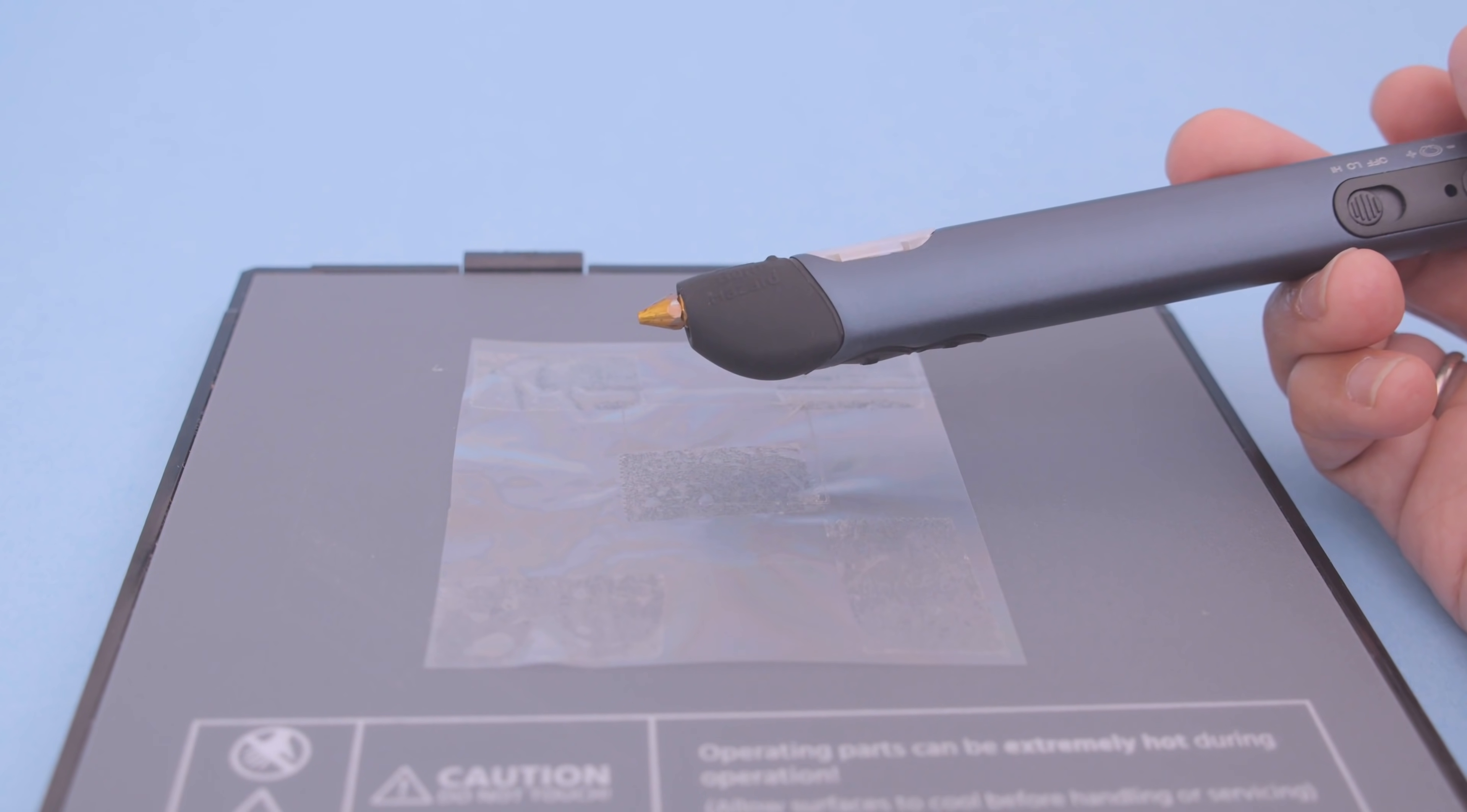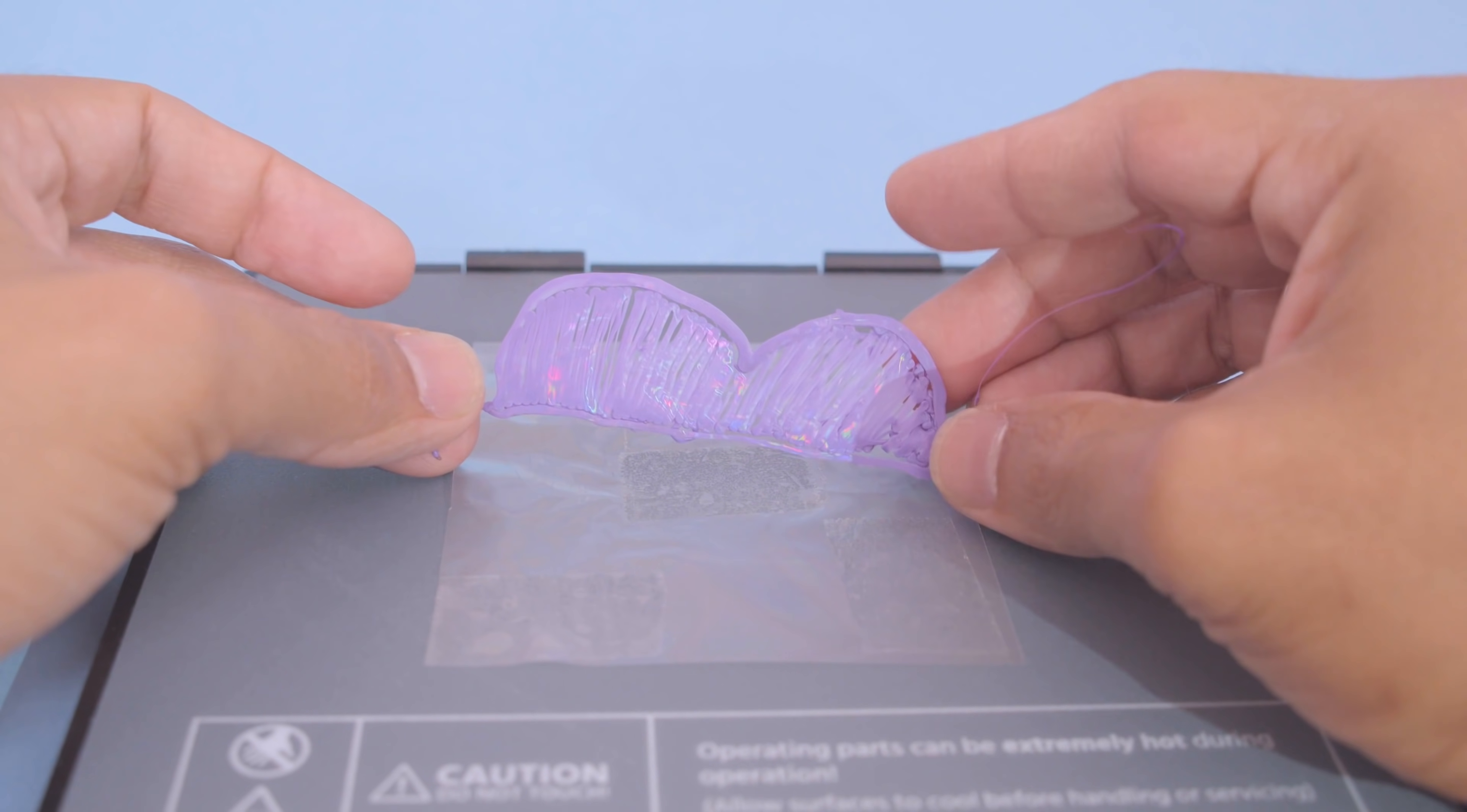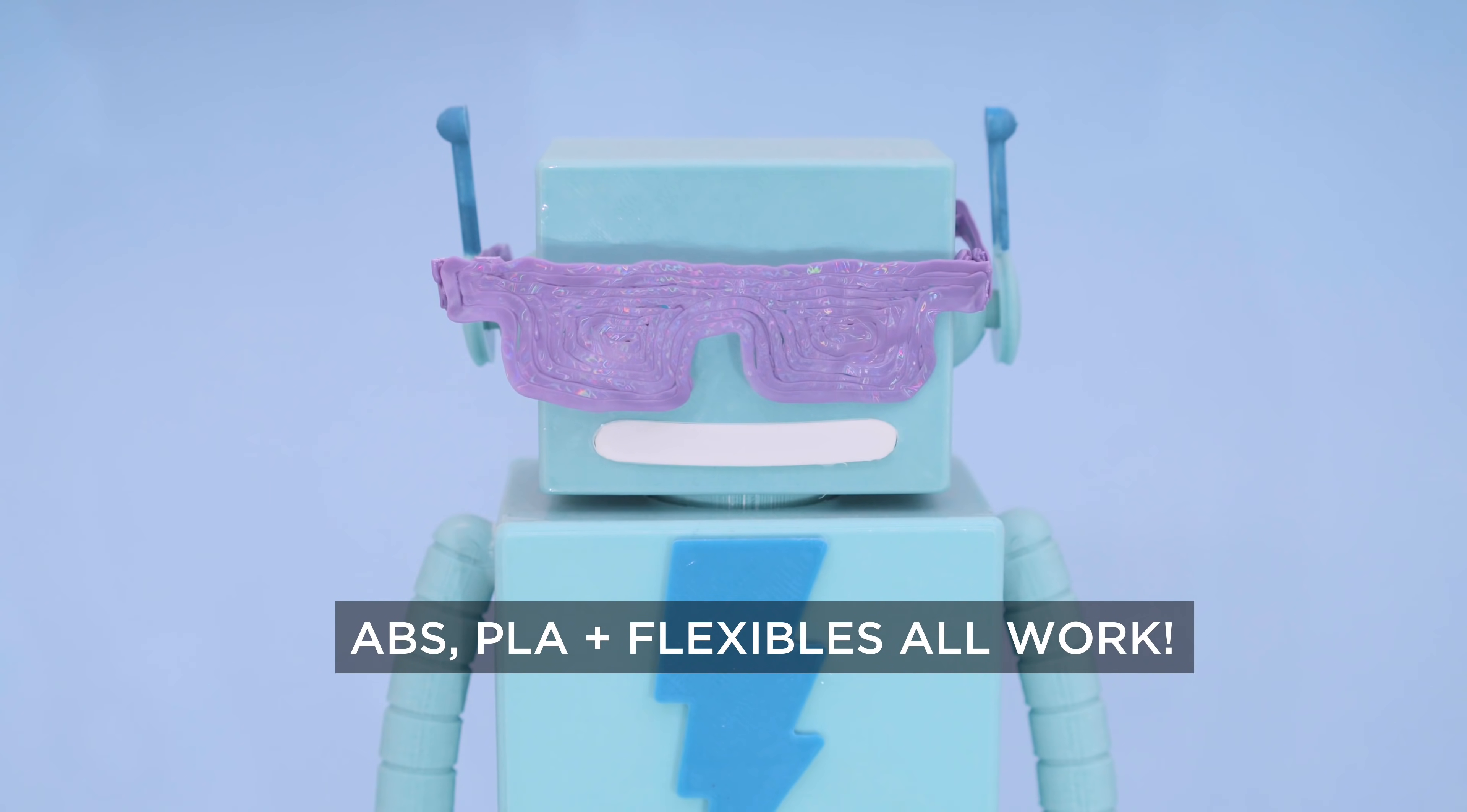The fastest way to test different filaments is to print directly on the film with a 3D printing pen. This also gives a good indicator for printing on the correct side of the sheet. We tested ABS, PLA, and NinjaFlex 85A.